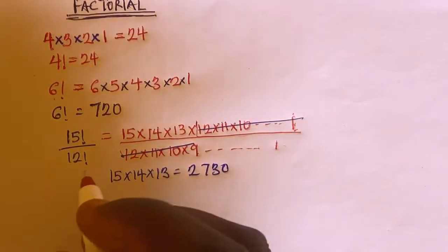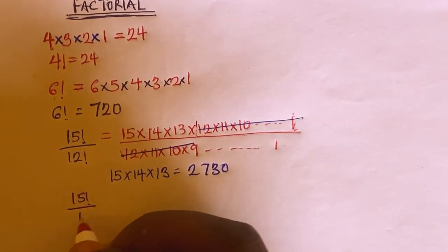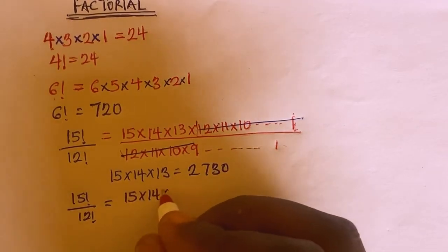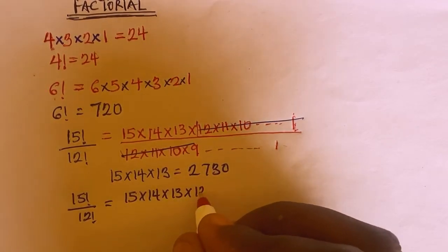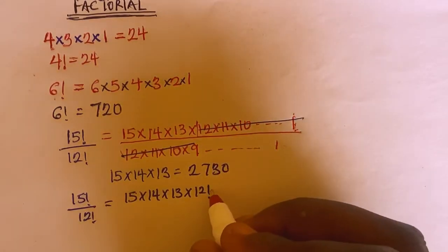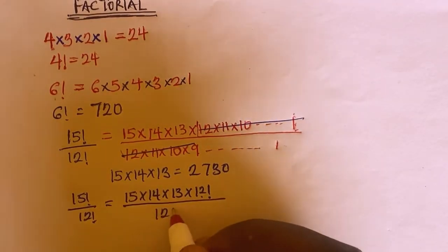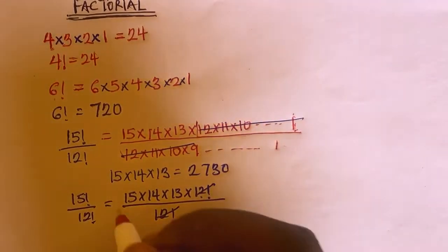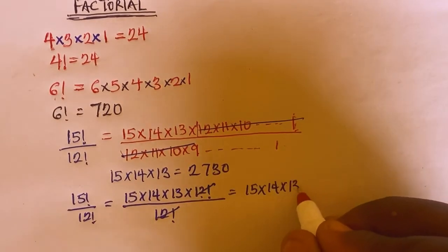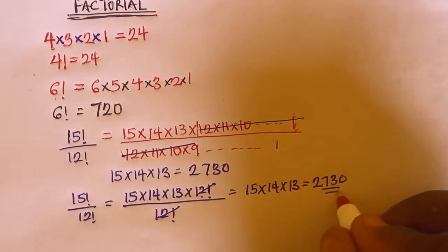So the short form is that instead of wasting time, you can just say 15 factorial divided by 12 factorial equals 15 multiplied by 14 multiplied by 13 multiplied by 12 factorial, divided by 12 factorial. You cancel the 12 factorials, and you are left with 15 multiplied by 14 multiplied by 13, which simply equals 2,730.